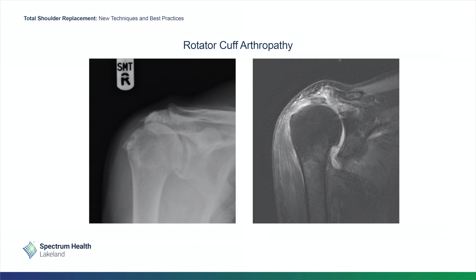Let's talk about rotator cuff arthropathy. It's very common. On the slide on the left, we can see the ball and socket, but you'll notice the ball now rests directly under that shelf of bone. In the normal x-ray, there was space there from the rotator cuff. When you lose your rotator cuff, the ball migrates up. The slide on the right is an MRI showing the same thing — the ball has moved up out of the socket because the rotator cuff is no longer present.